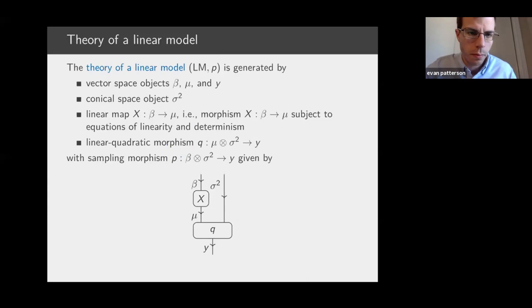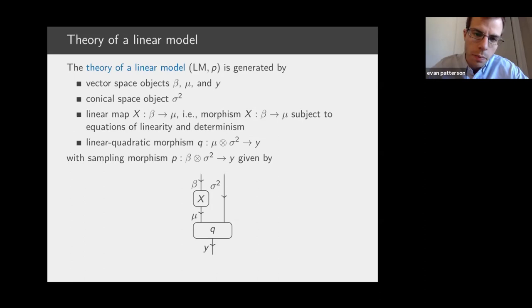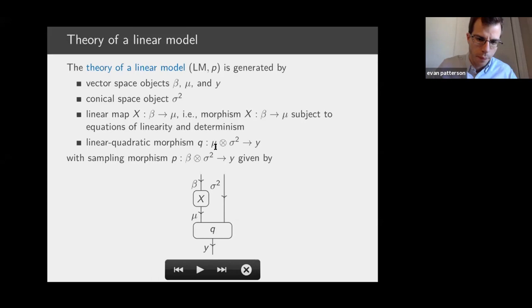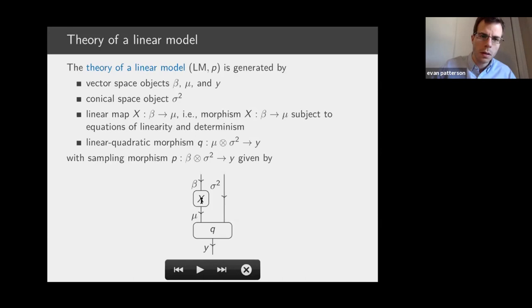A more interesting theory is the theory of a linear model. Its underlying category is generated by vector space objects beta, mu, and y, a conical space object sigma-squared representing the variance, a linear map representing the design, a linear-quadratic morphism representing the random part of the model, and then the sampling morphism is given by precomposing the random part with the design matrix.